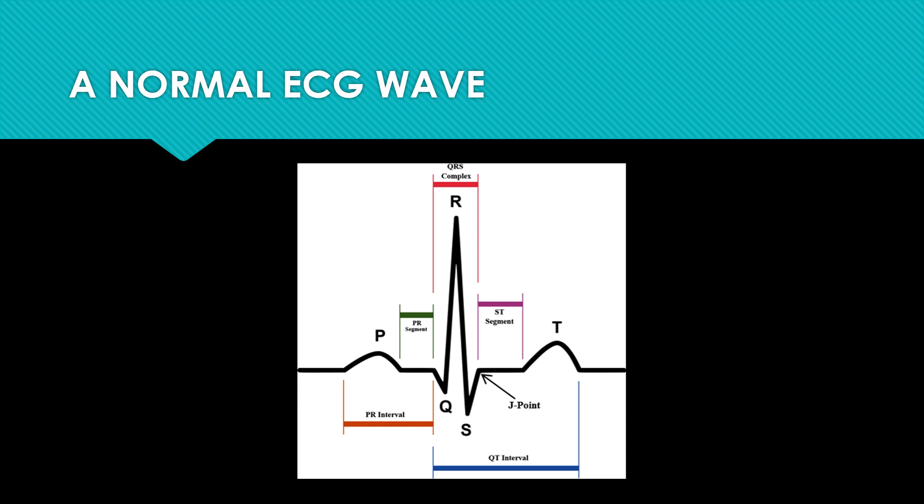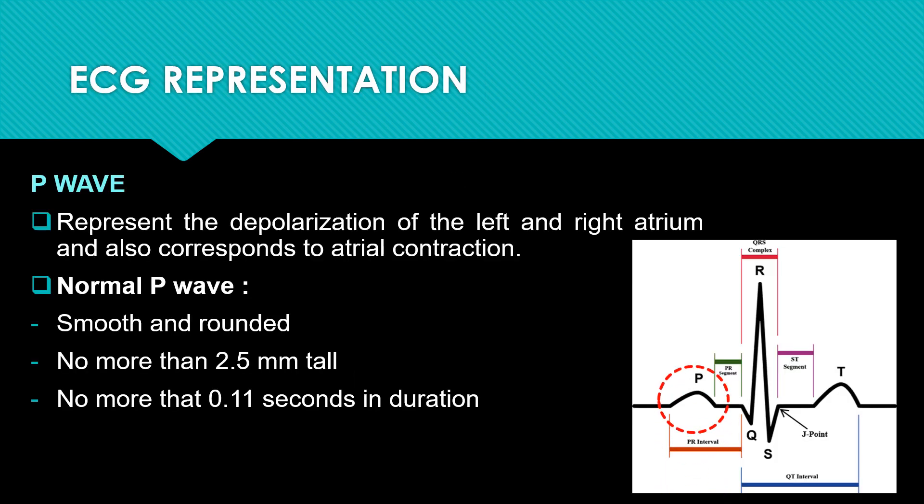ECG is a diagnostic tool that is routinely used to assess the electrical and muscular functions of the heart. This is the normal ECG wave. The first ECG representation is the P wave, which represents the depolarization of the left and right atria and also corresponds to atrial contraction. The normal P wave is smooth and rounded, no more than 2.5 mm tall, and the normal duration is less than 0.11 seconds.